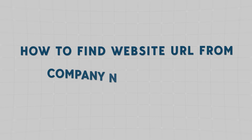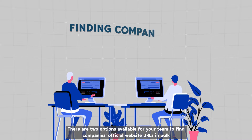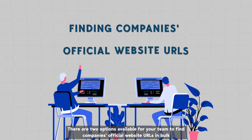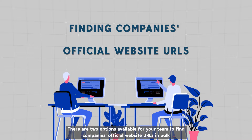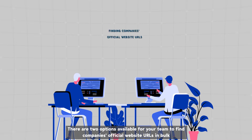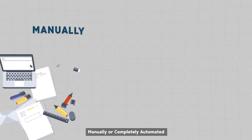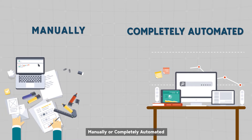How to find website URLs from company names in bulk. There are two options available for your team to find a company's official website URLs in bulk: manually or completely automated.